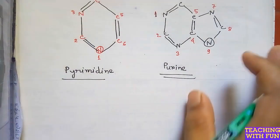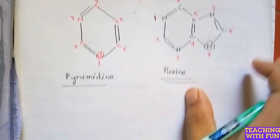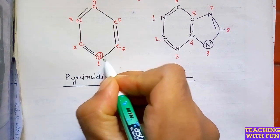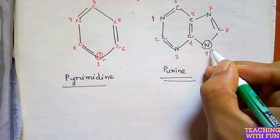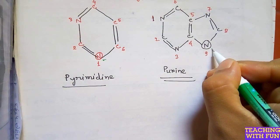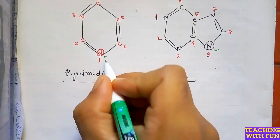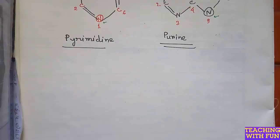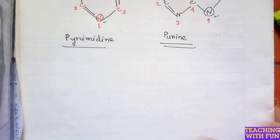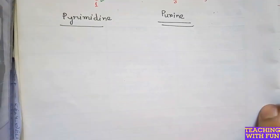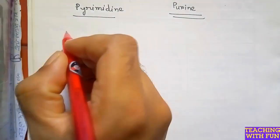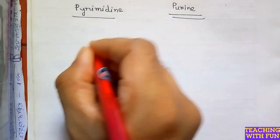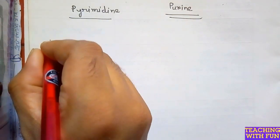The N1 position in pyrimidine and the N9 position in purine will be joined with pentose sugar. Now we will see the chemical names of these nitrogen bases.